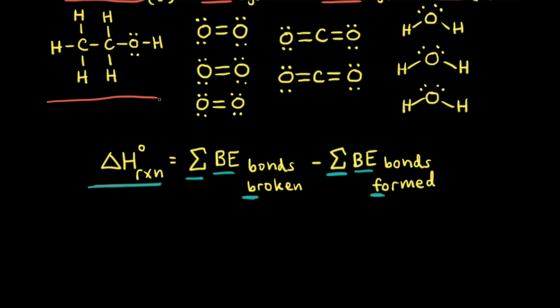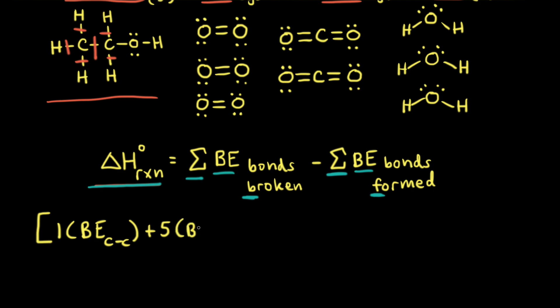Let's start with the ethanol molecule. We're going to approach this problem first like we're breaking all of the bonds in these molecules, and we're not going to worry about units until the end just to save some space. Looking at the ethanol molecule, we would need to break a carbon-carbon bond — so we have one carbon-carbon bond. Next we have five carbon-hydrogen bonds that we need to break.